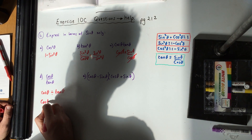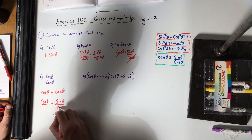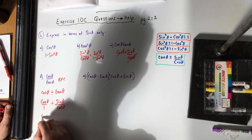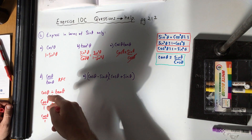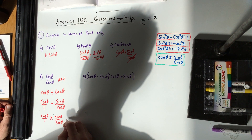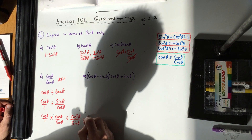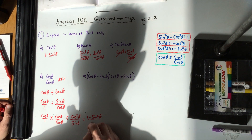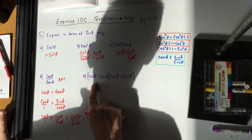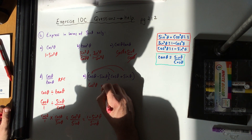For cos divided by tan: a bit of KFC here — keep, flip, change. Tan is sinθ/cosθ, so cos ÷ tan becomes cos theta times cos theta over sine theta, giving cos²θ over sine theta. Of course, cos squared is 1 minus sin squared from our identity, so we write (1 minus sin²θ) over sine theta.